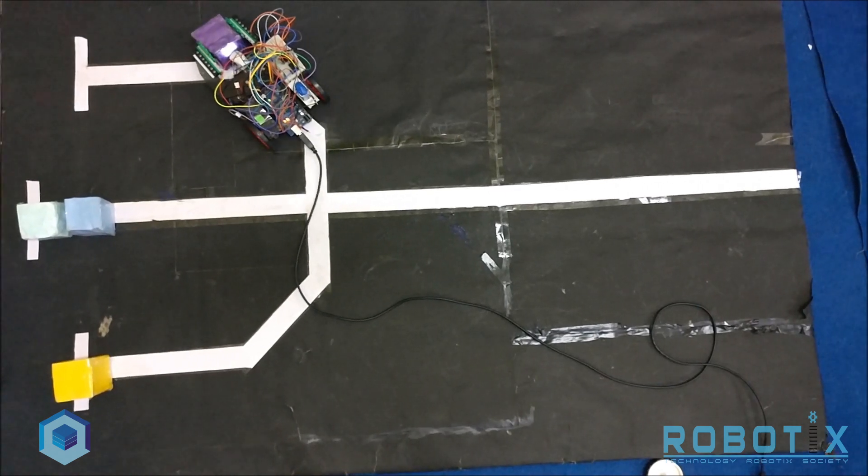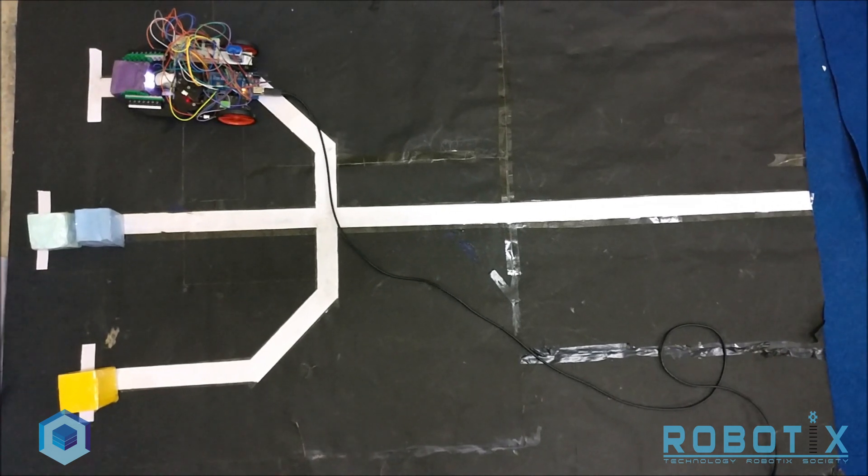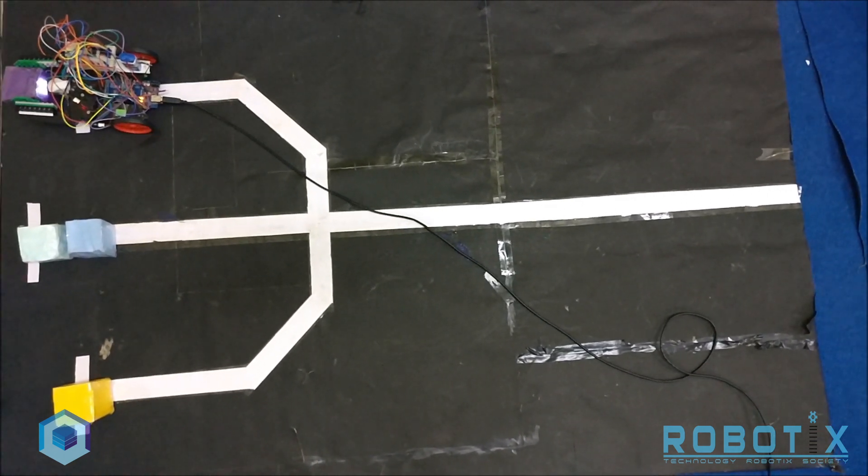The bot here uses a typical differential drive mechanism for its traversal. The grippers are activated on a high torque DC motor for a firm grip.